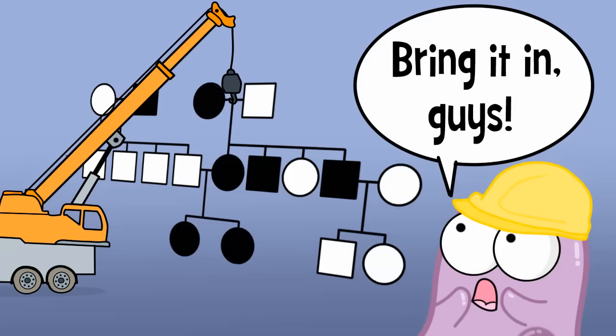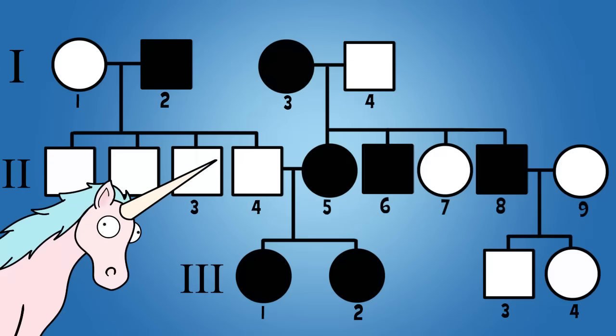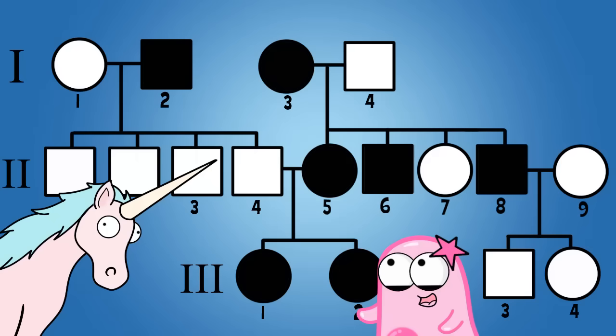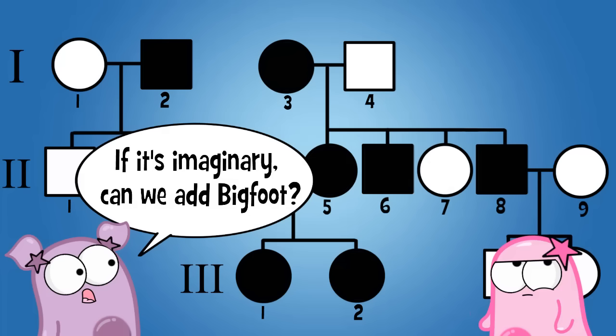That's just one tiny pedigree. Let's look at a big family reunion—an imaginary one, because I don't really know whether our relatives have free or attached earlobes. I thought about sending a survey to them, but it felt a little awkward. So here we go: a big, giant, imaginary family of relatives.